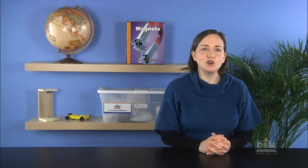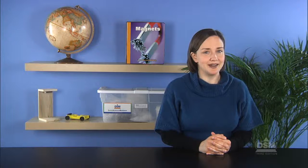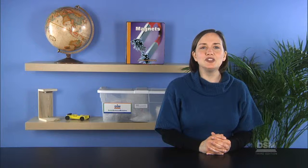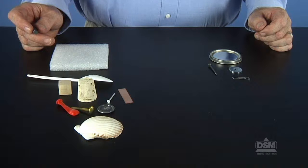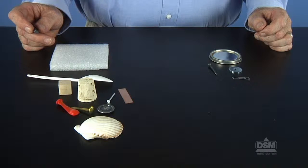Then, have each team name one or two objects and share if it is magnetic or non-magnetic. Do this until all 14 objects are identified. Students will find that the paper clip, metal washer, can lid, and steel nail are magnetic and the other 10 objects are non-magnetic.